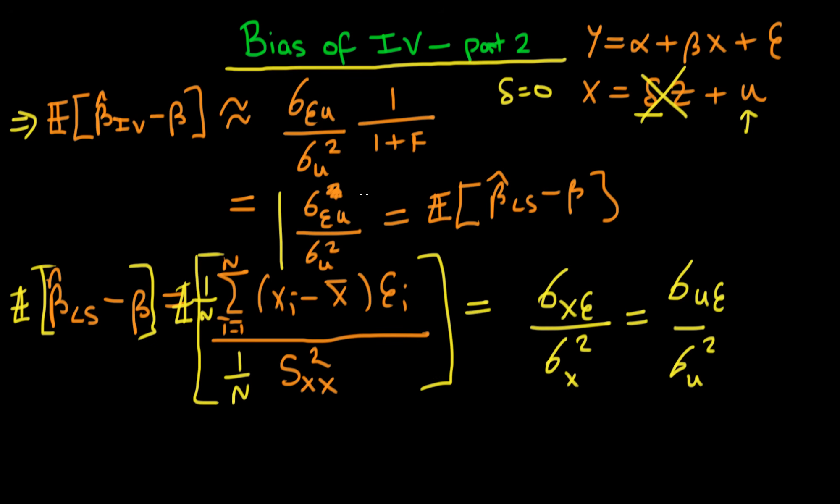So we've proved what I stated at the end of the last video. In the next video I'm going to provide some intuition as to why there is this finite sample bias in instrumental variables estimators. I'll see you then.